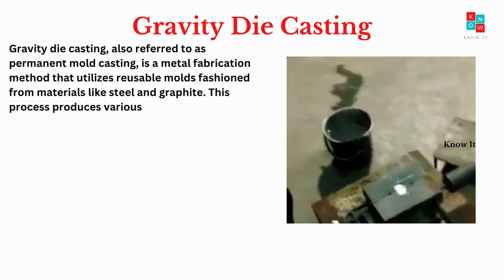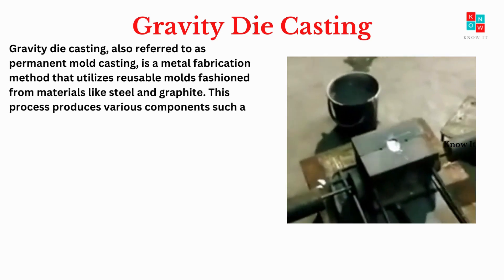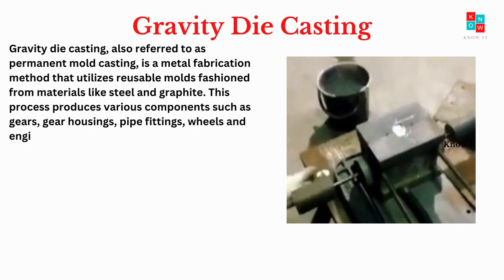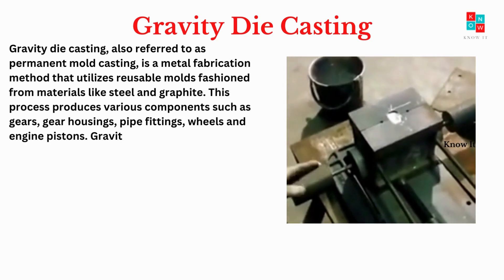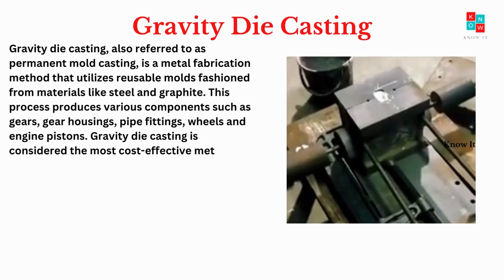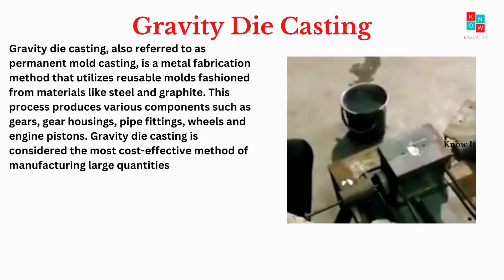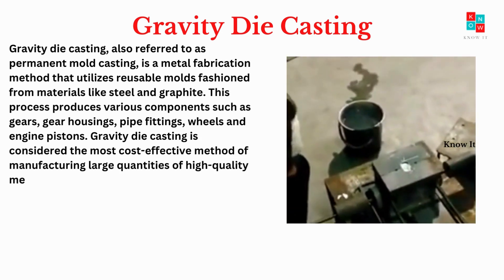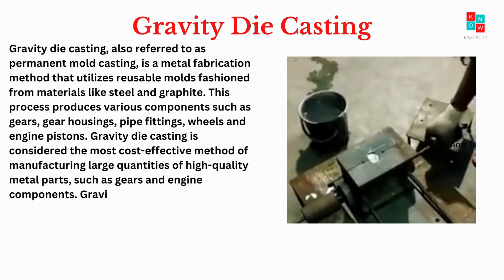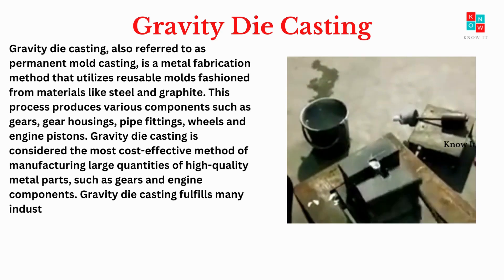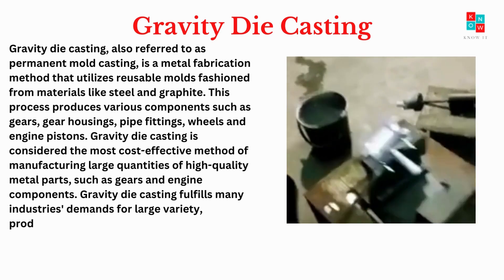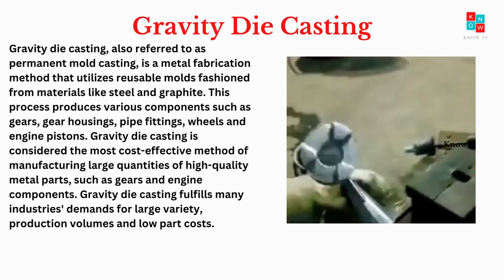This process produces various components such as gears, gear housings, pipe fittings, wheels and engine pistons. Gravity die casting is considered the most cost-effective method of manufacturing large quantities of high-quality metal parts, such as gears and engine components. Gravity die casting fulfills many industries' demands for large variety, production volumes and low part costs.